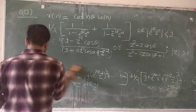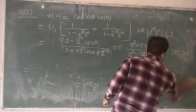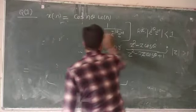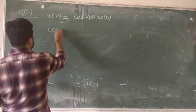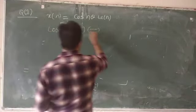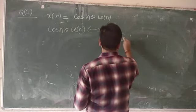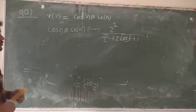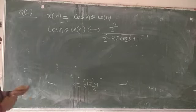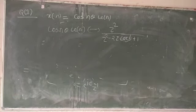To summarize: the Z-transform of cos(nθ)·u(n) = (z² − z·cos θ) / (z² − 2z·cos θ + 1), with ROC |z| > 1. In the next class we will solve more problems and then study the inverse Z-transform. Thank you.